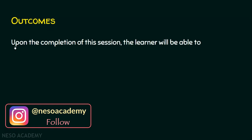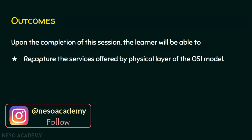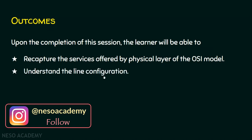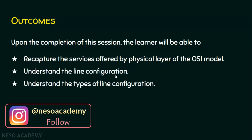What are we going to learn today? We have three outcomes for the day. Upon completion of the session, the learner will be able to — outcome number one: recapture the services offered by the physical layer of the OSI model. Outcome number two: understand line configuration. And the last outcome: understand the types of line configuration.